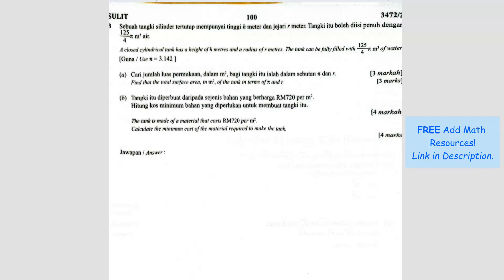Question number three. A closed cylinder tank has a height of h meters and radius of r meters. So we've got a cylinder where the radius is r and the height is h. They said that the tank can be fully filled, so this is the volume. Find the total surface area of the tank in terms of pi and r squared. Let's do that, question A.